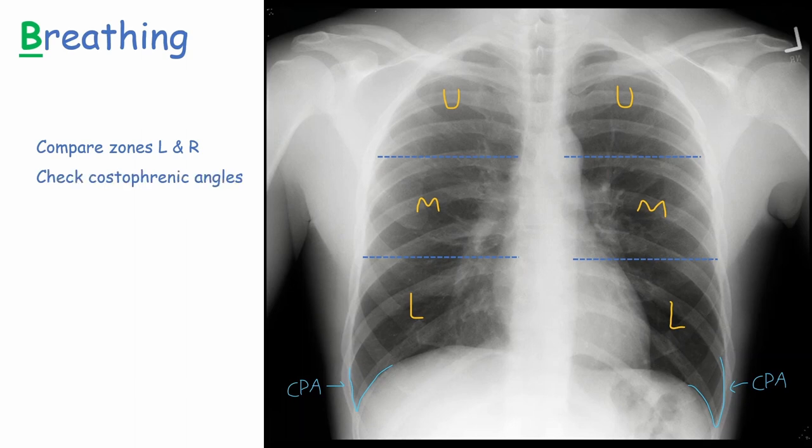We then need to check that the costophrenic angles are clear. Blunting of the costophrenic angles could represent a pleural effusion or consolidation. Next, check the surrounding pleura for any thickening, which could be a result of asbestos exposure or cancer.